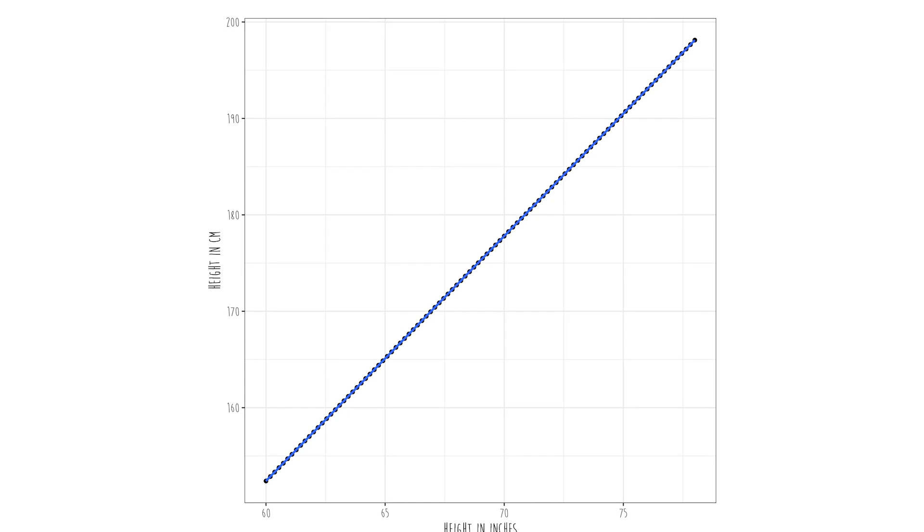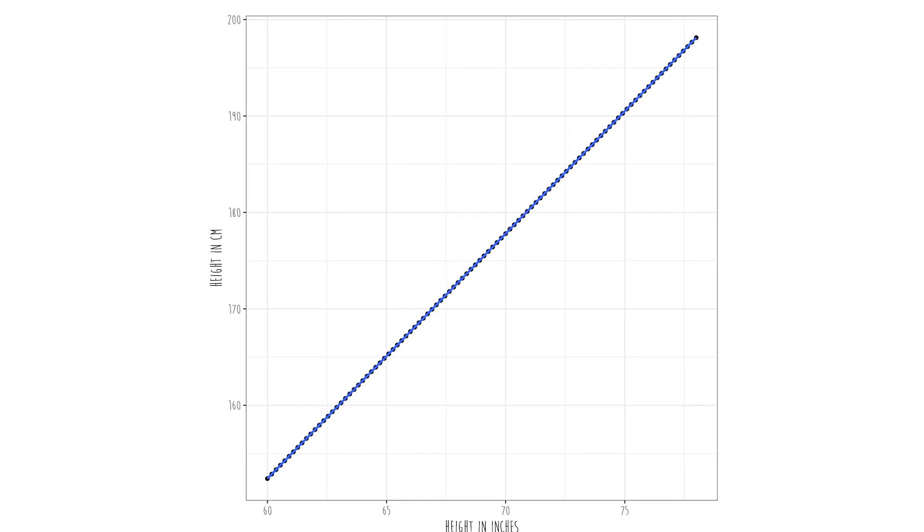What about a perfect positive relationship? For perfect positive relationships, the correlation coefficient is going to be plus one. Like in this example: height in inches versus height in centimeters. Because the taller you are in inches, the taller you are in centimeters. Makes sense. So that's negative one and positive one. And right in the middle we have zero — zero means there is no relationship between the two variables.